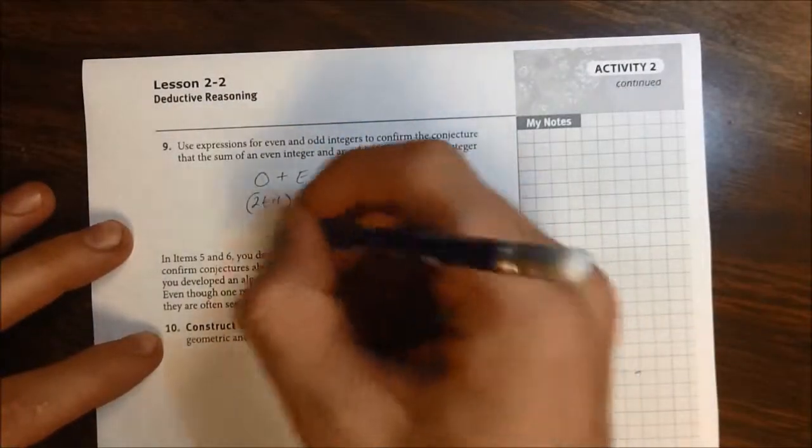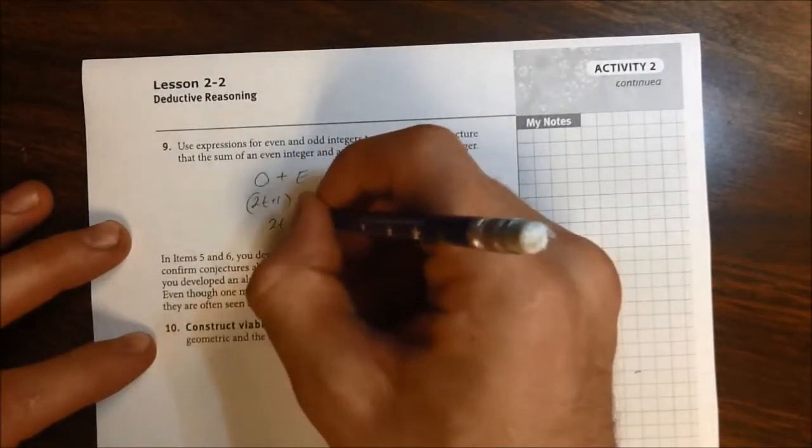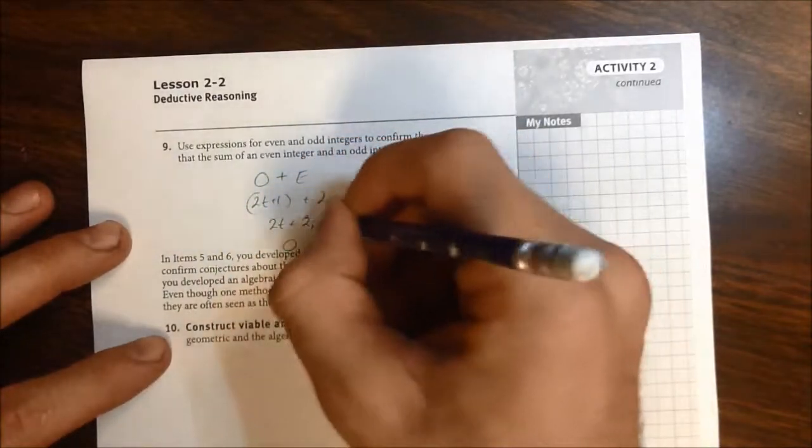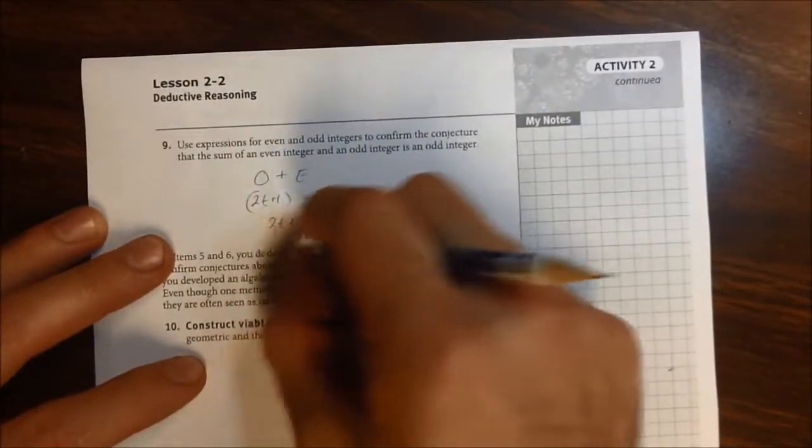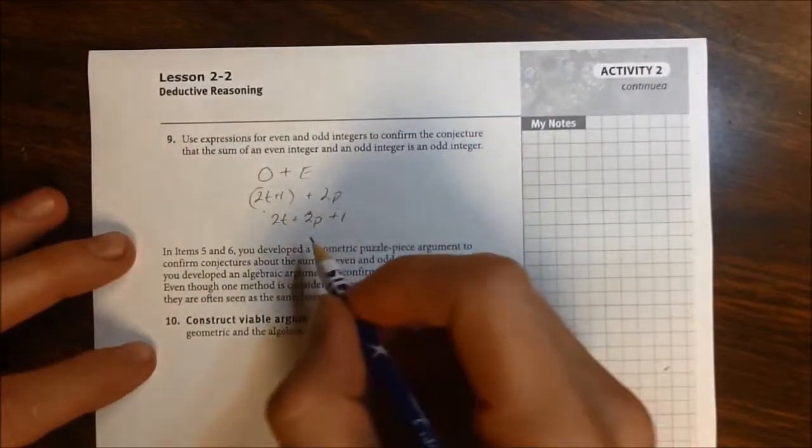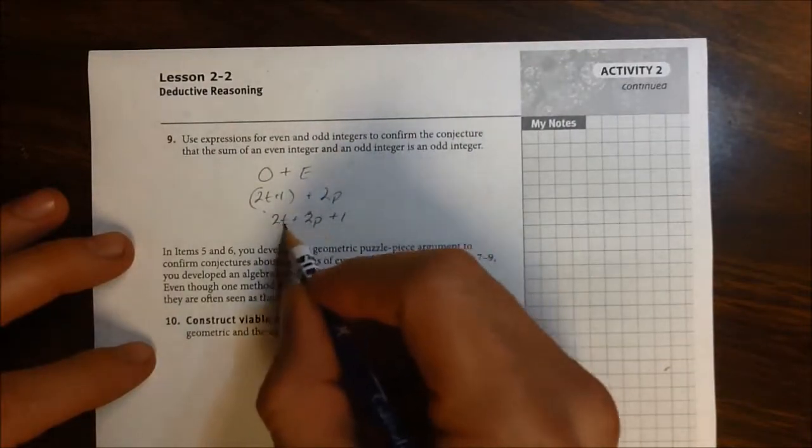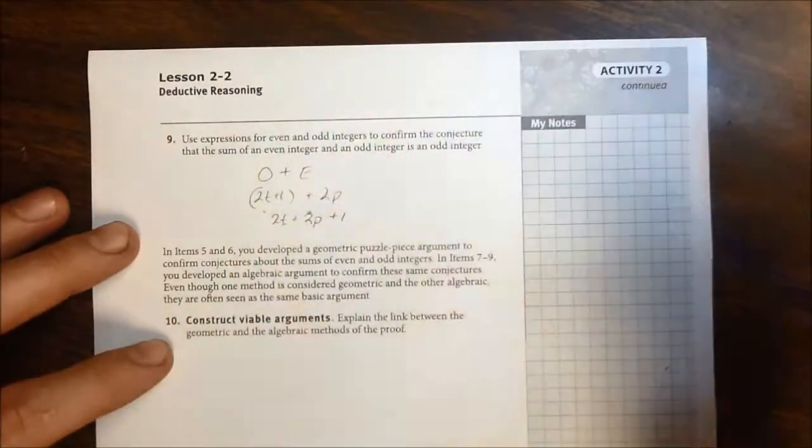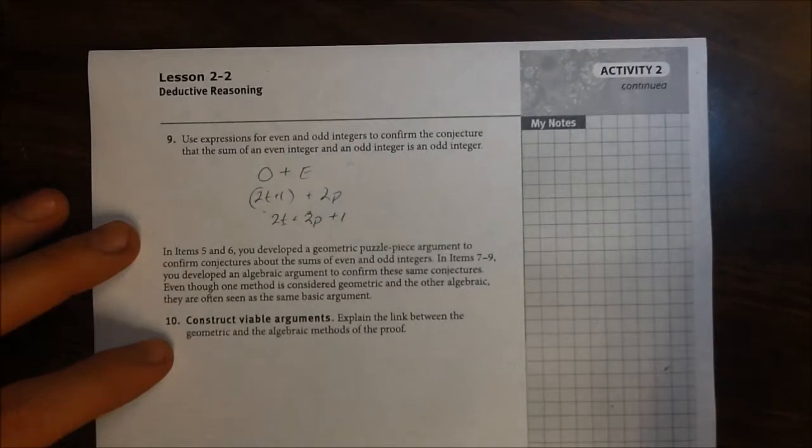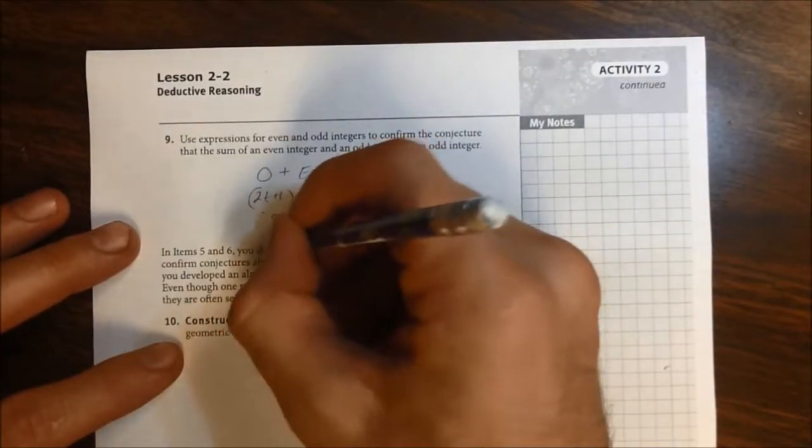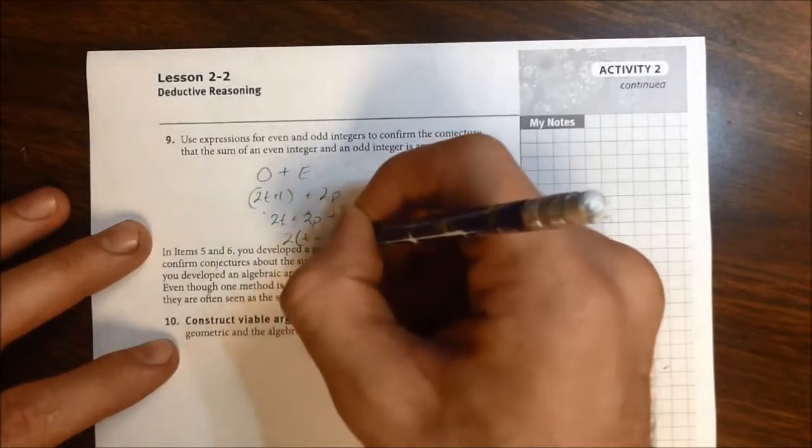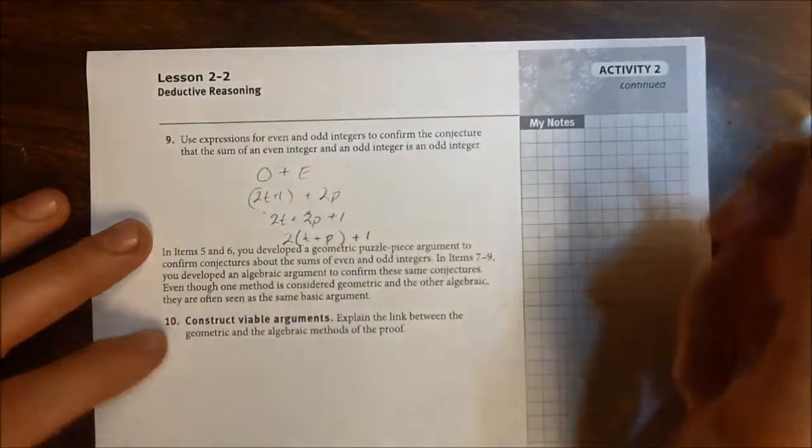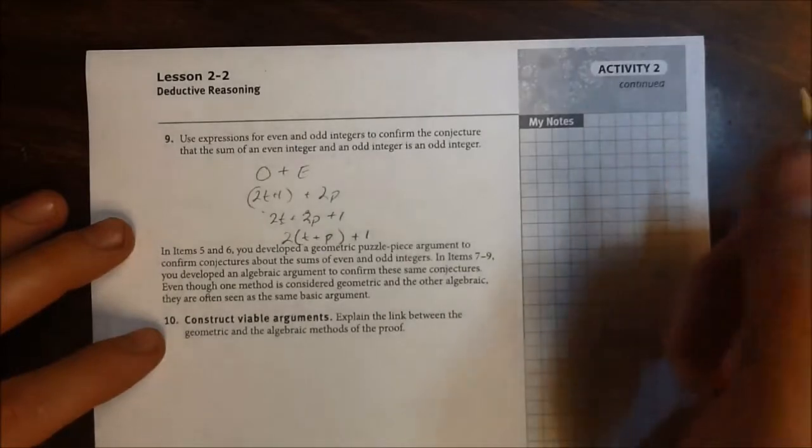I'm going to rearrange the terms. So I'm going to write 2t plus, and then I'm going to write 2p, followed by the positive one. Well, if you look, you should notice that the first two terms, 2t and 2p, have a 2 in common. So I'm going to pull that out. I'm going to factor it out using the distributive property. So my new expression is going to be 2 times t plus p, and then we have that add 1.